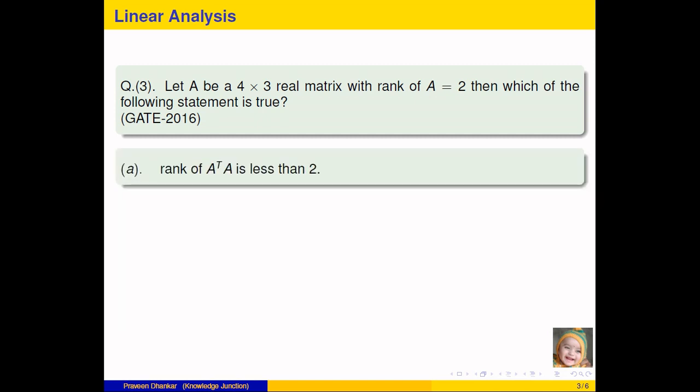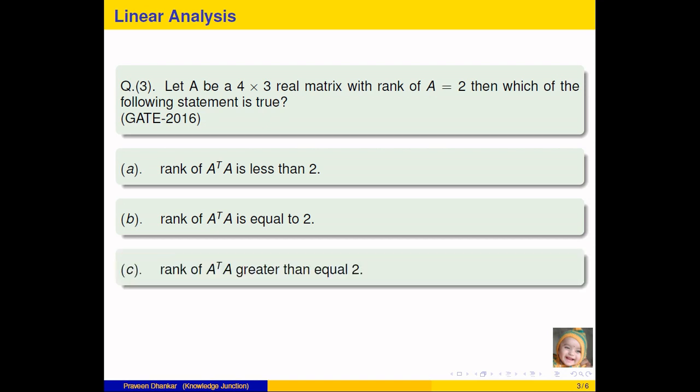Number 1: rank of A transpose A is less than 2. Second: rank of A transpose A is equal to 2. Third: rank of A transpose A greater than equal to 2. And D: rank of A transpose A can be any number between 1 and 2.